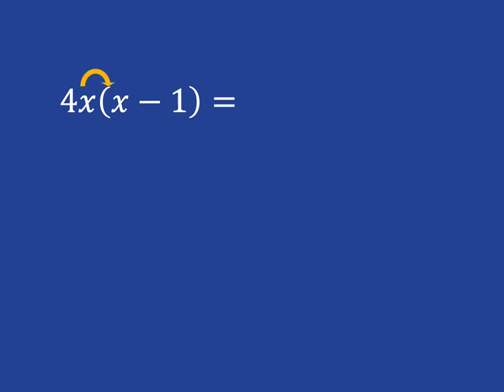So 4x needs to multiply with x, which gives you 4x squared, and 4x needs to multiply with minus 1, which gives you minus 4x.